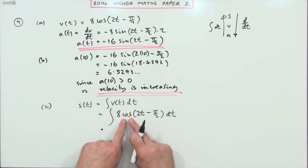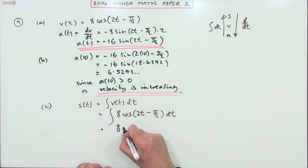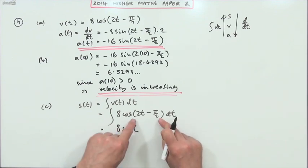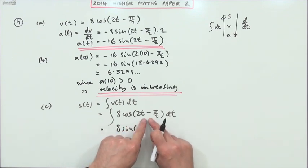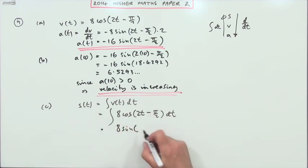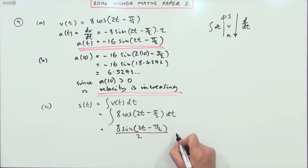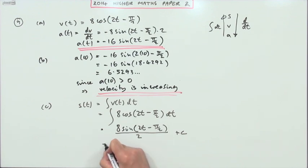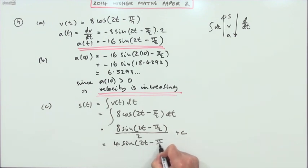Integrating, that'll go back to sine and positive sine at that, but it's a function of a function, a linear function, which it would have to be to integrate. So for this linear part, divide by its derivative. So it'll be divided by 2. And don't forget, plus C. So that means that S(t) is going to be 4 sin(2t - π/2) + C.